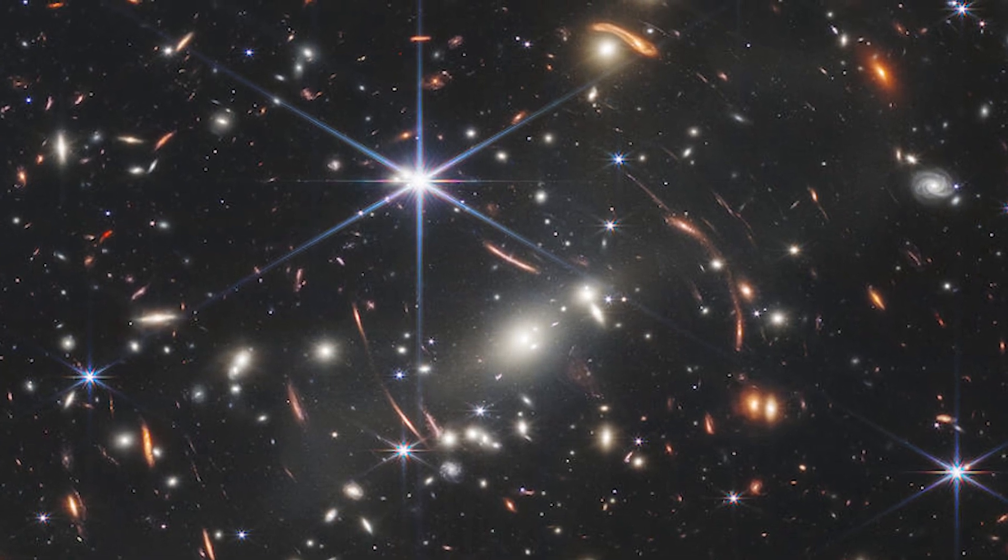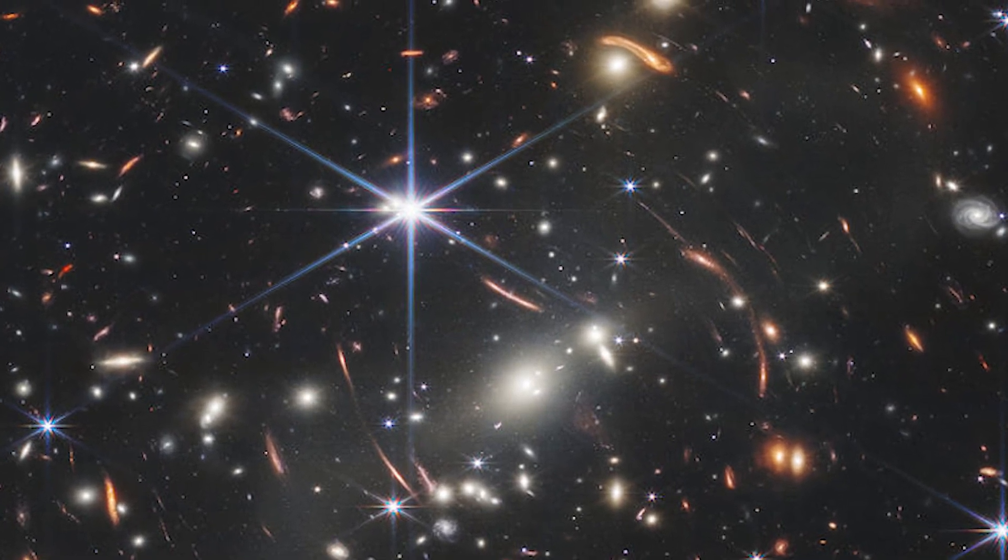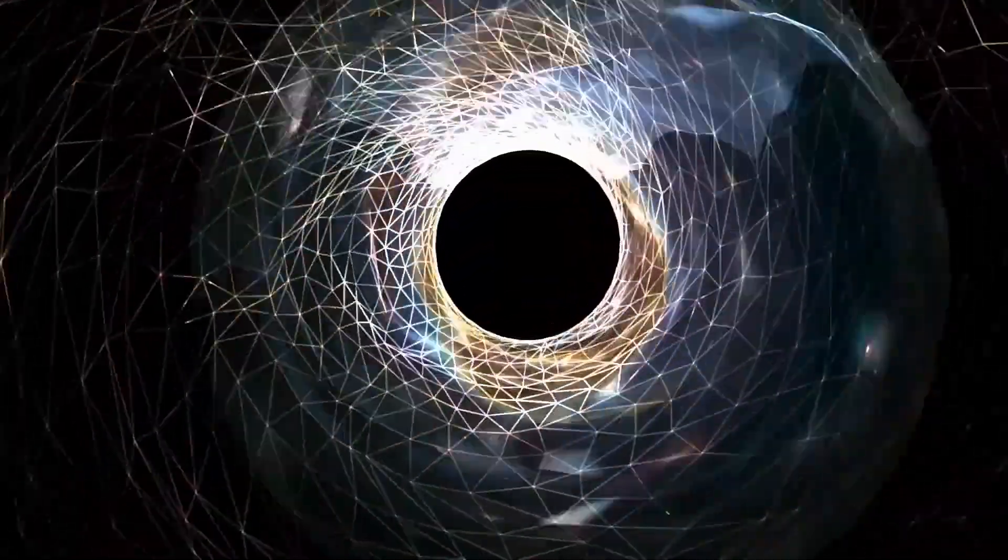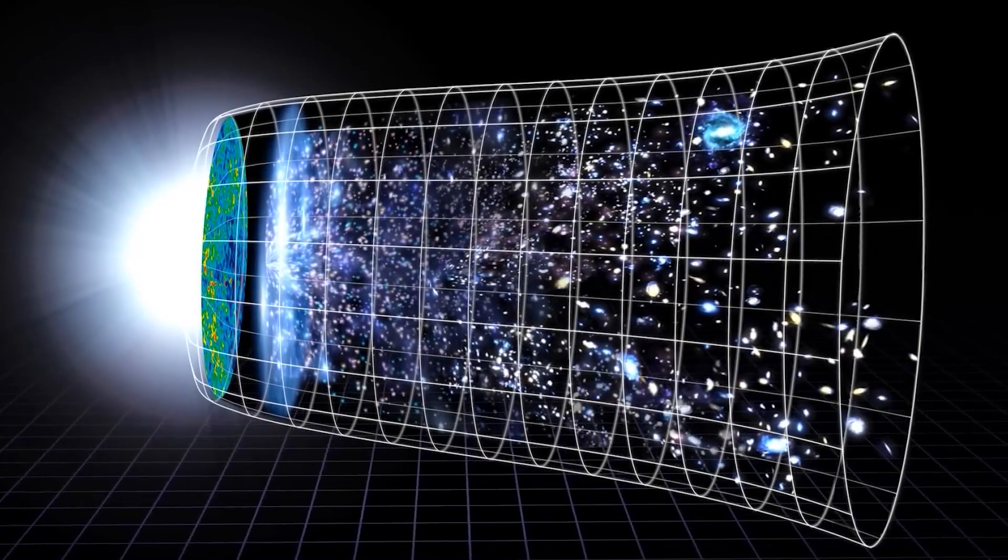In one of its images, the JWST took pictures of galaxy clusters that are warping space. This was achieved using the phenomenon of gravitational lensing, which was predicted by Albert Einstein in 1915.